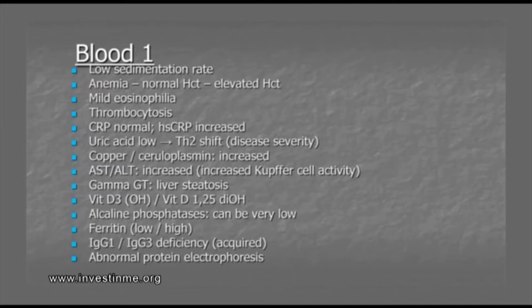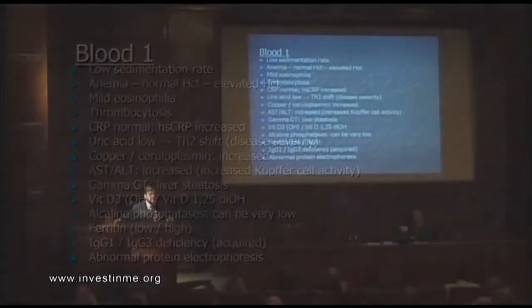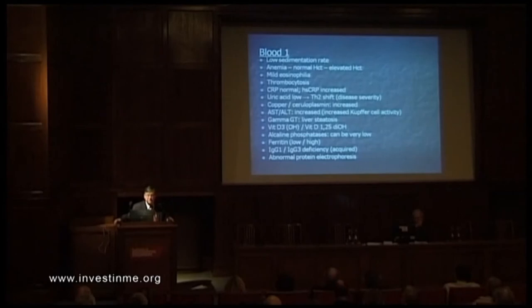CRP is usually normal, usually below 3, but high-sensitivity CRP is increased when you take a normal value of 0. Uric acid is low — we see that uric acid can be very low in these patients, and we see that as a Th2 shift.